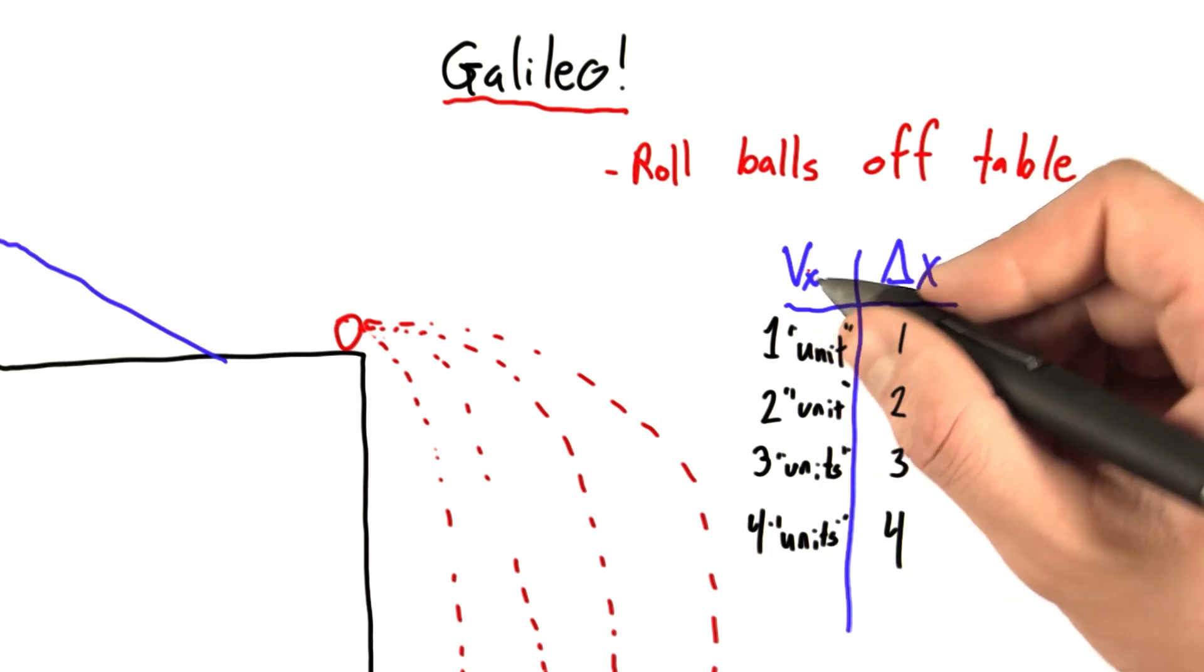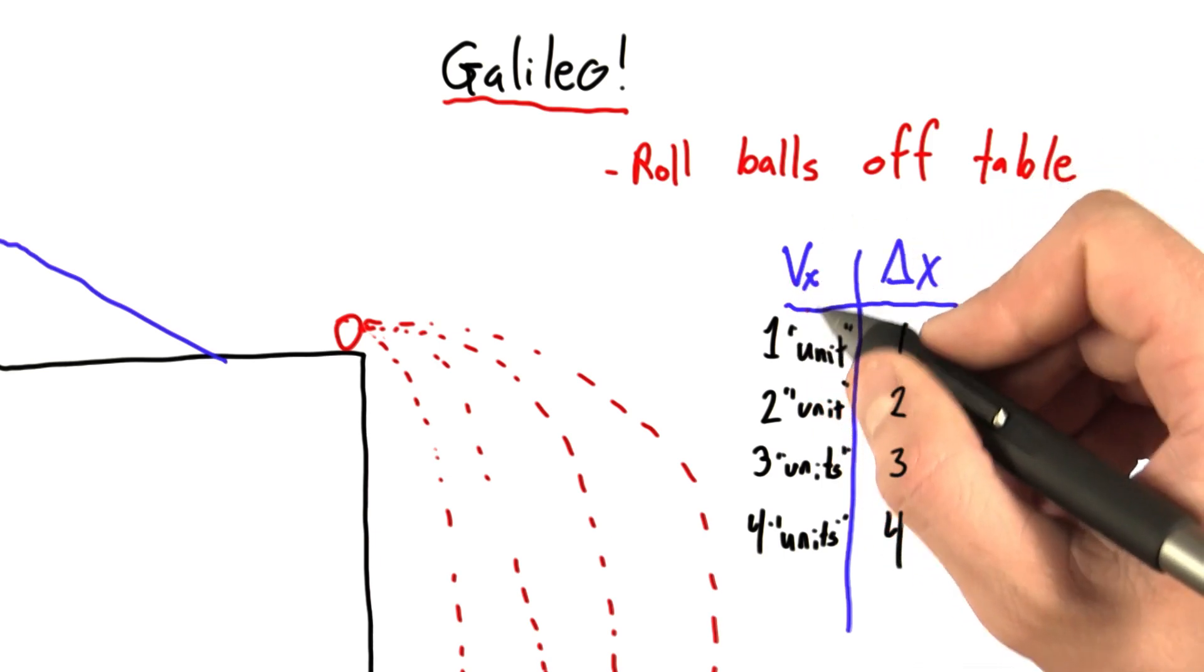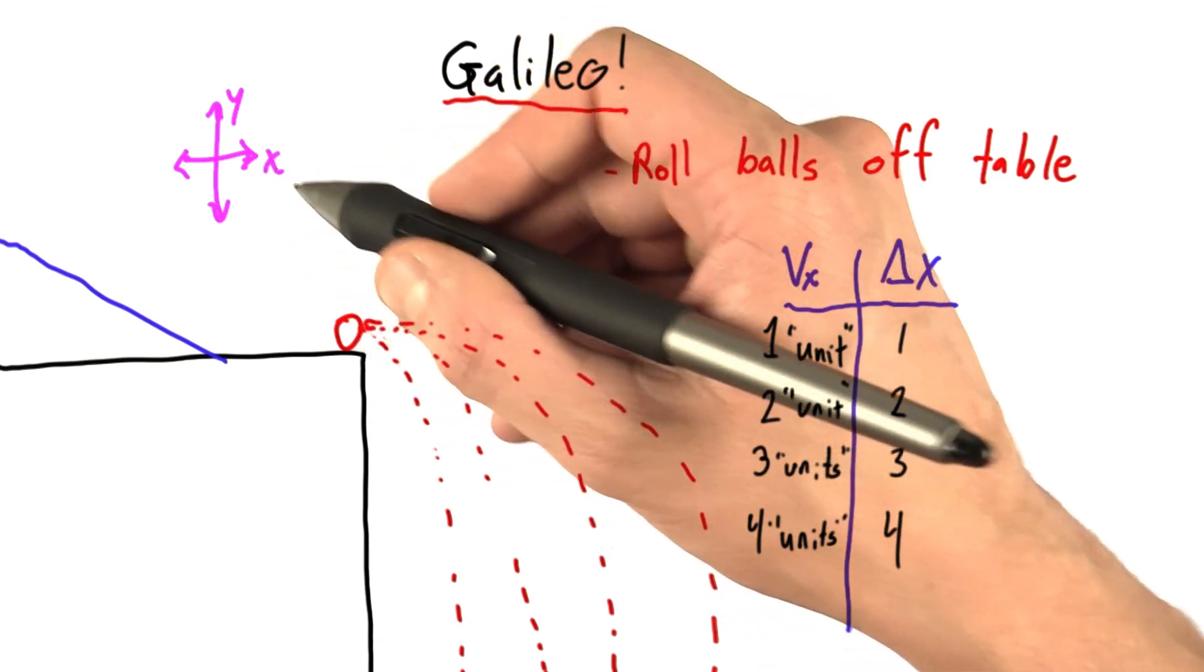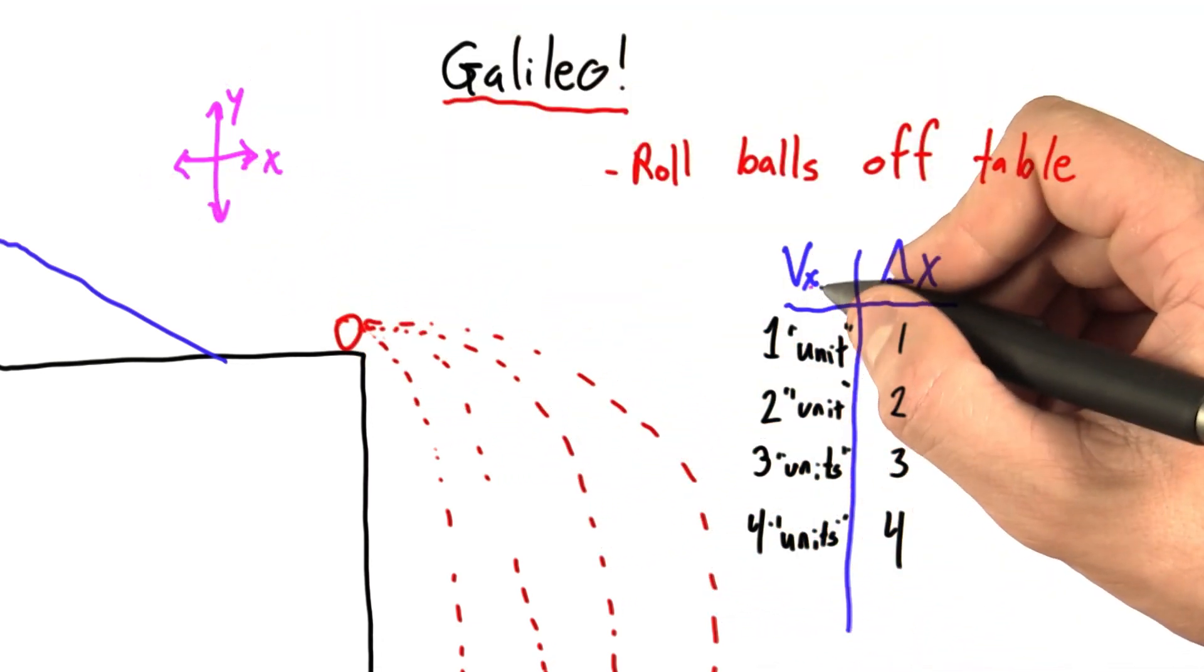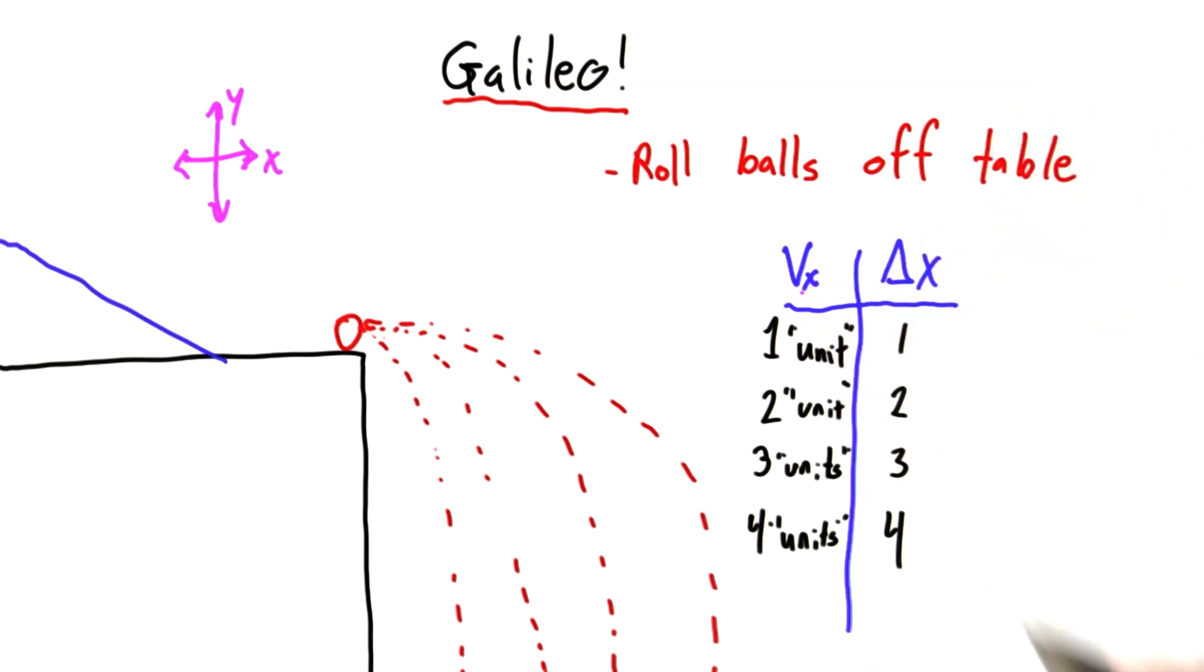You'll notice I've called this vx. This x indicates an x direction. When we label axes, we usually call the horizontal direction x and the vertical y. And so this x is just here to remind us that we're talking about a velocity in the horizontal direction.